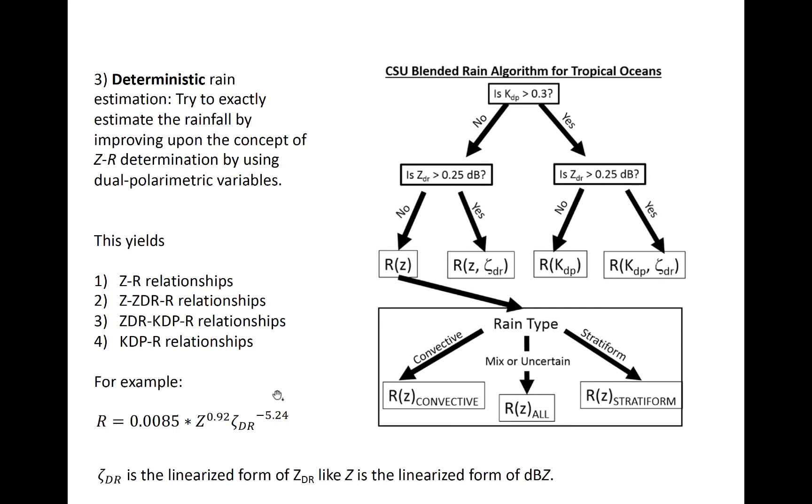An example of a Z-ZDR relationship is seen at bottom left. ZDR and KDP are typically only used if they are large, following this part and this part of the decision tree, and indicate that oblate raindrops are present.